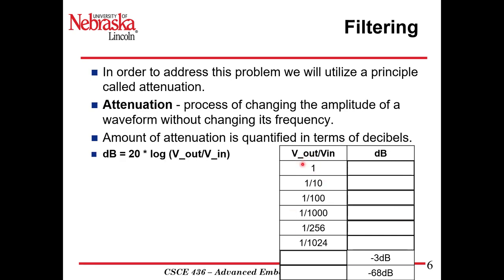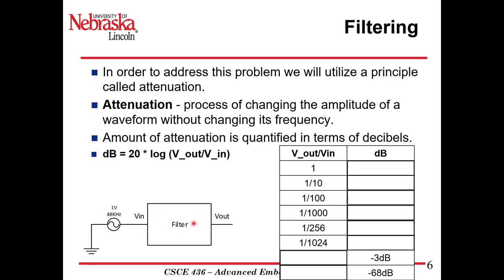The equation for decibels of attenuation is 20 times the log base 10 of V_out over V_in. We're going to talk about different fractions — V_out over V_in before and after the filter.